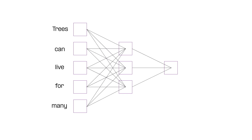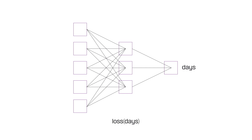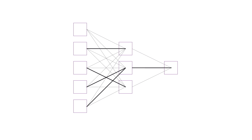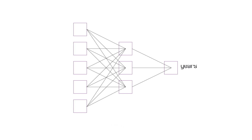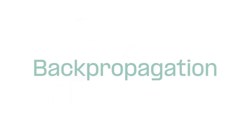The loss function spits out a value that tells the model how good or bad the prediction was, and the closer this value is to zero, the better the prediction. Using this value, the model can trace back its steps and figure out which parts of the model contributed most to the mistake and adjust these connections to make better predictions in the future. This process is called backpropagation.